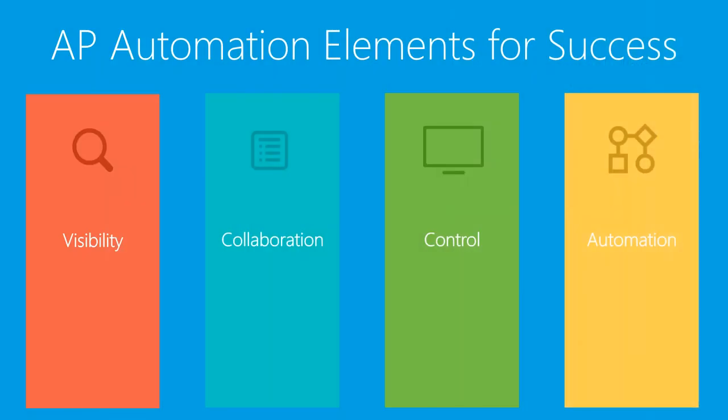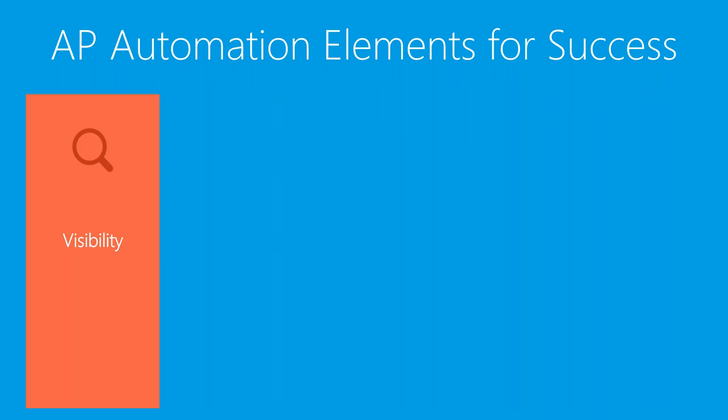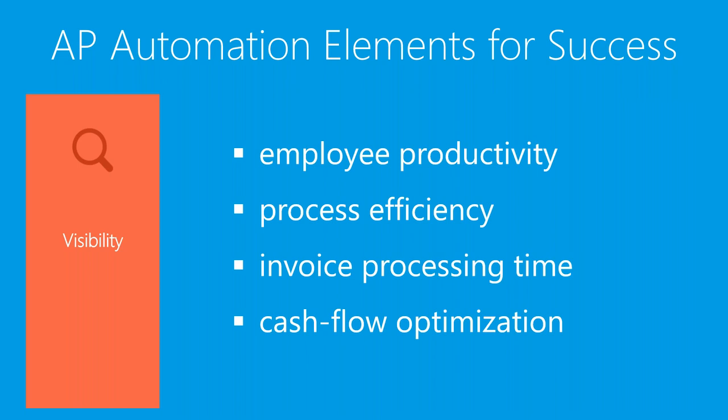In the world of AP, there are four basic elements we'll be using today: visibility, collaboration, control, and automation. Visibility goes into the liabilities and operating expenses — it's a basic requirement for most major functions within any enterprise organization. It gives an overall view of operations and establishes standards for performance improvement. It's also a key factor in giving AP departments a higher degree of influence as a strategic partner in a business.